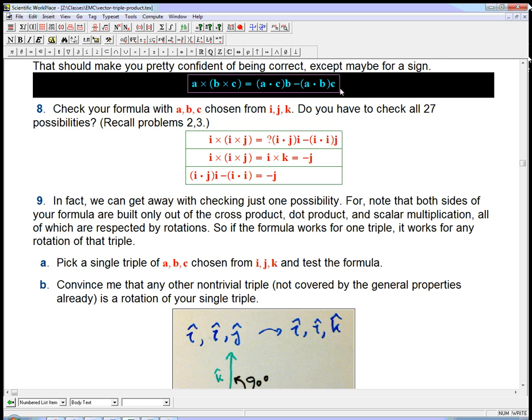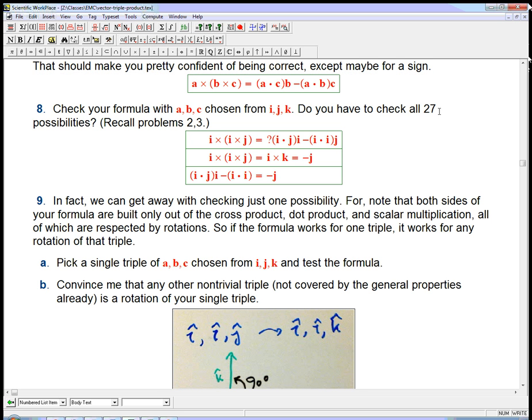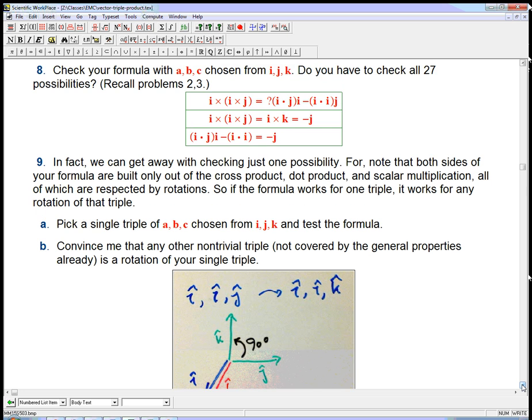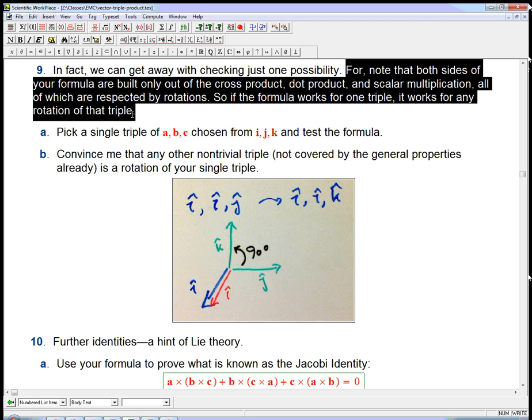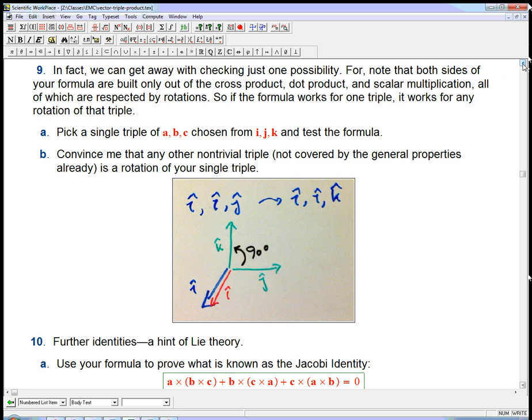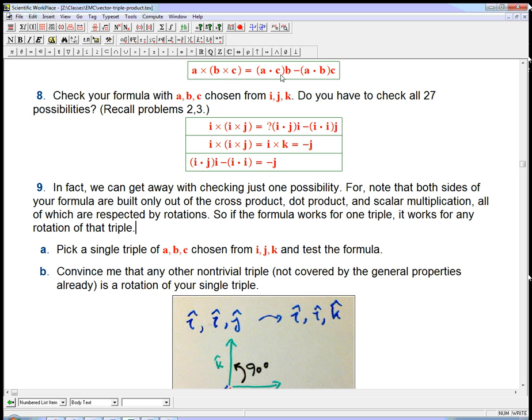We had been led to a guess, and we'd made sure that the guess was correct, at least in principle, by checking. Here's the guess that we got for our identity. By checking, we could check a lot of possibilities, i, j, and k, and then the multilinearity takes care of the rest. But I want to emphasize doing things in an elegant way, and we can really just get away with checking one of those cases.